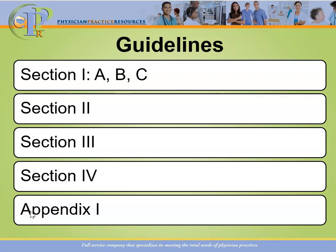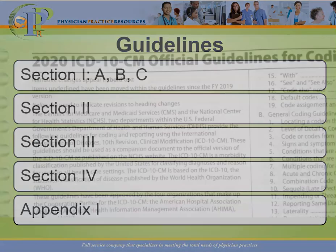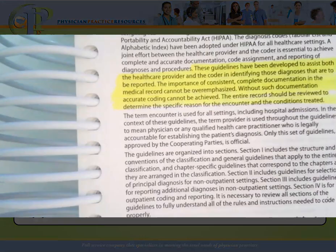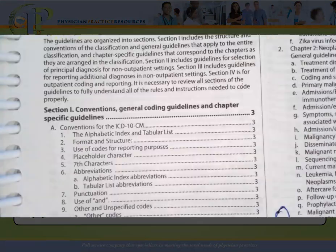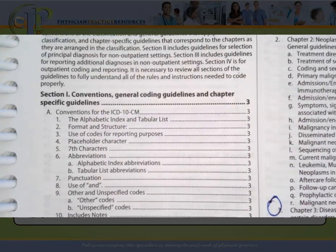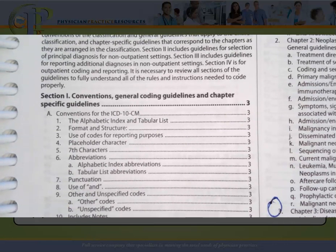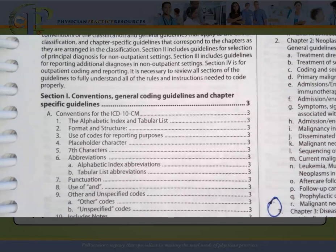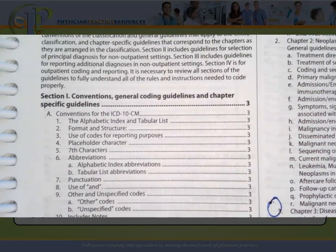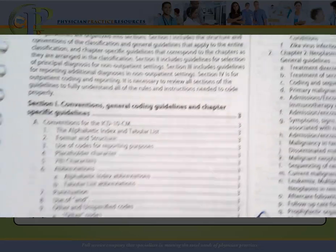Section one is divided into parts A, B, and C. Let's take a look at those parts now. Section one is for conventions, general coding guidelines, and chapter-specific guidelines. Section one A focuses on conventions for ICD-10-CM, and section one A has 19 guidelines that you'll want to review.